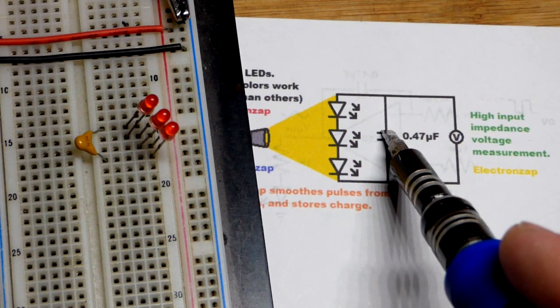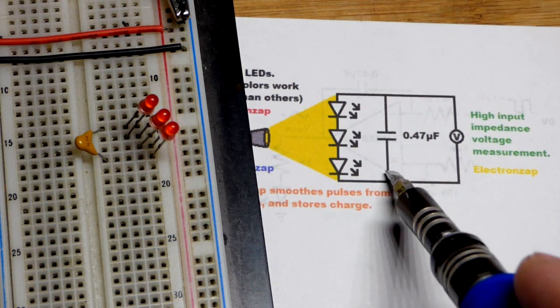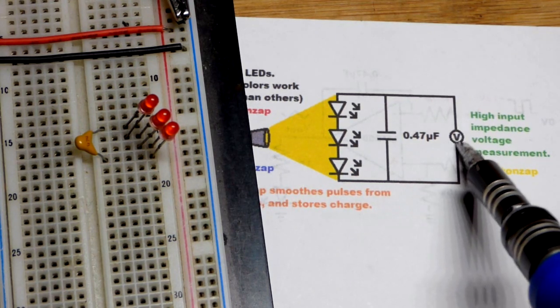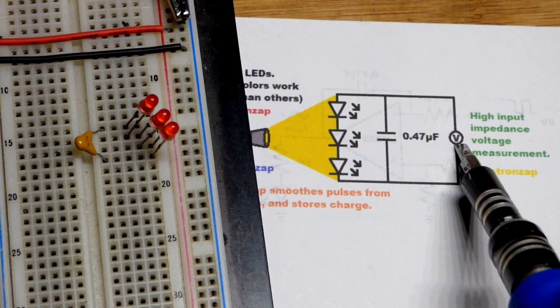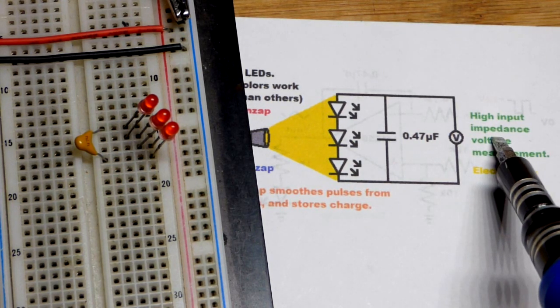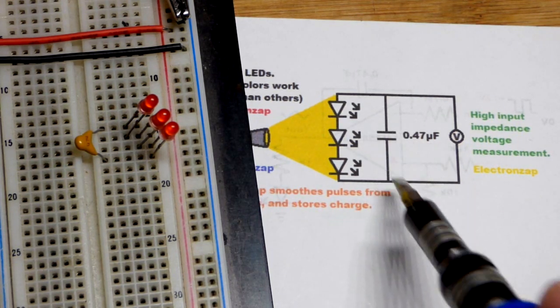As you saw when I removed the light, it held some charge. Now most of that discharge—some of it probably got through the LEDs, but most of it probably went through the oscilloscope. So it's not supposed to let current through it, but a little bit does trickle through. So the higher the impedance, the less current that would trickle through, and the more accurate voltage measurement we would get.